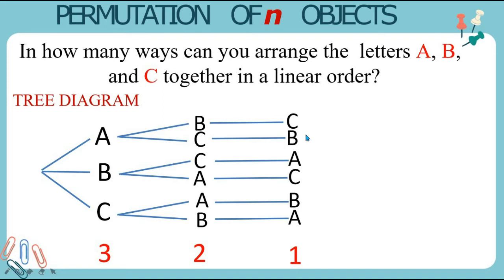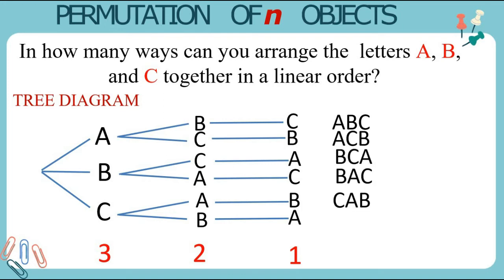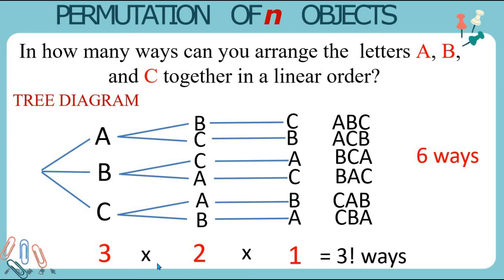We are going to list all the possible arrangements: ABC, ACB, BCA, BAC, CAB, CBA. So there are 6 ways we can arrange the letters A, B, and C together in a linear order. If we multiply all the choices in every order, this is equal to 3 times 2 times 1, which is equal to 3 factorial ways.